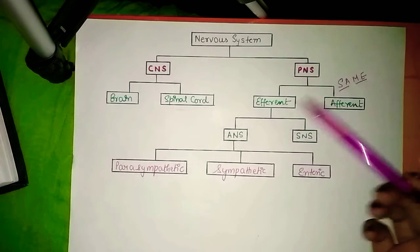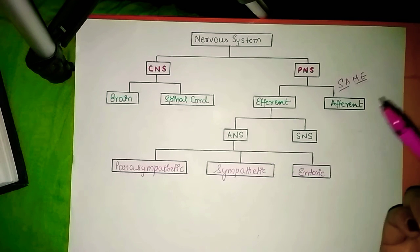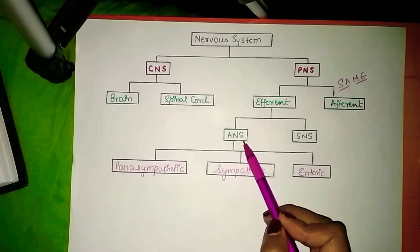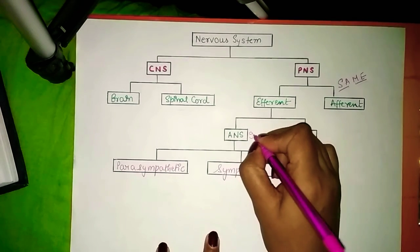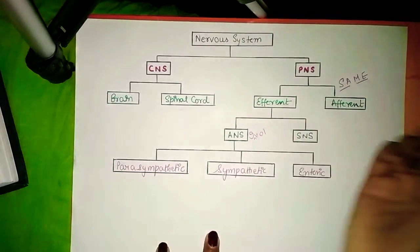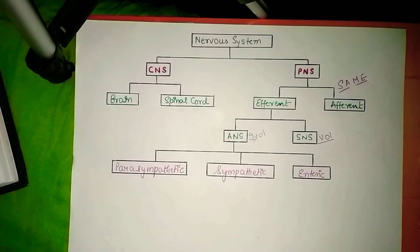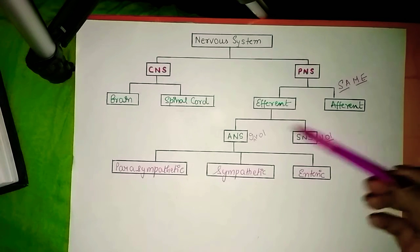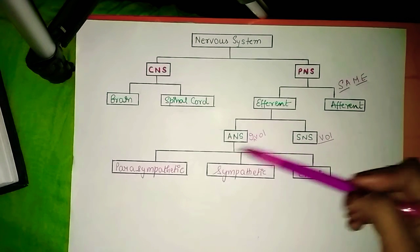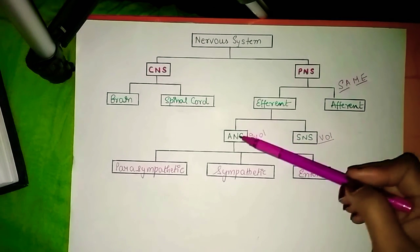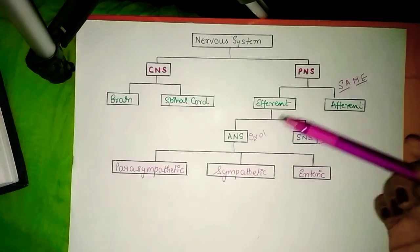Based on the type of response — whether voluntary or involuntary — the peripheral nervous system is divided into the autonomic nervous system and the somatic nervous system. Autonomic is for involuntary responses, while the somatic nervous system is for voluntary responses. The autonomic nervous system innervates internal organs to control vital functions that keep us alive.